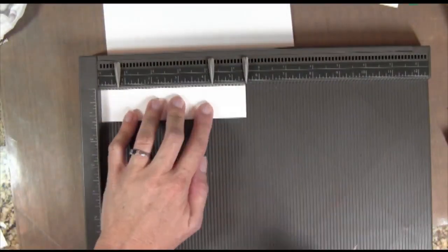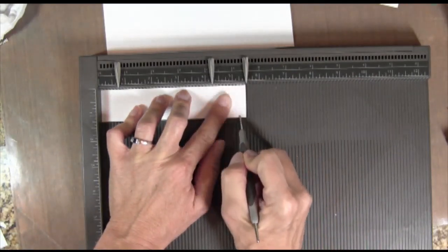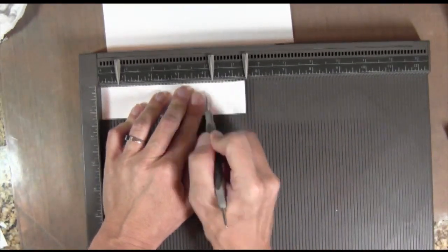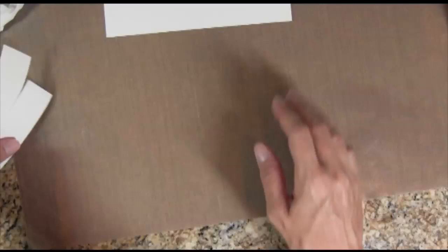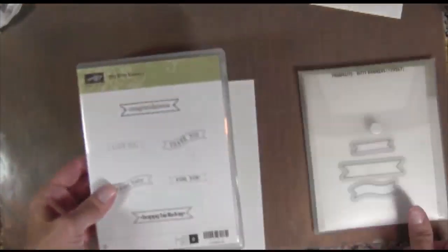and I'm going to take my Stampin' Up! scoreboard and there's so many different score lines on this so I love it. So I'm going to score these five and a half by one and a quarter inch pieces every quarter inch. I'm going to do both of those pieces every quarter inch.